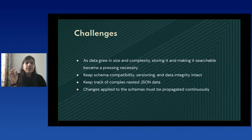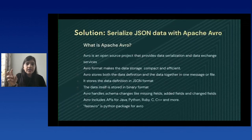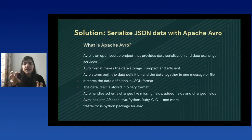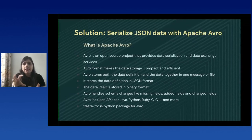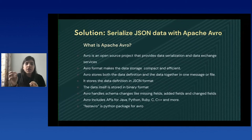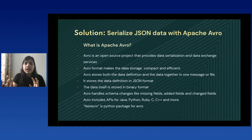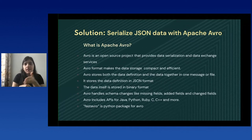The solution we came up with is serializing this JSON data using Apache Avro. Avro is an open source project that provides data serialization and data exchange services. Data serialization means changing data into binary format. Apache Avro provides that facility, and along with that, since it converts your data into binary format, it gives you the advantage of compact data storage — it reduces the size of data when converting from JSON to Avro format.